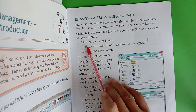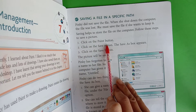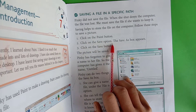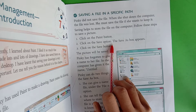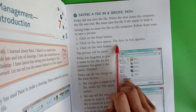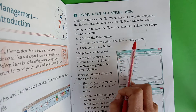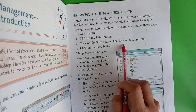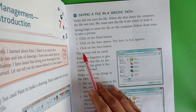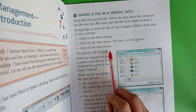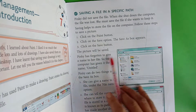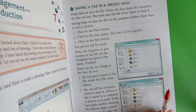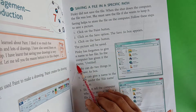सबसे पहले Paint button पे click करना है। Then click on the Save option — वहाँ पे Save option पे click करना है। Then the Save As box appears — एक Save As box आ जाना था। Click on the Save button — इससे picture save हो जानी थी।